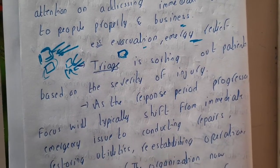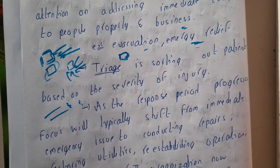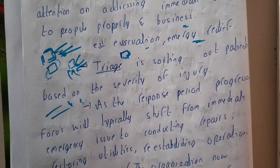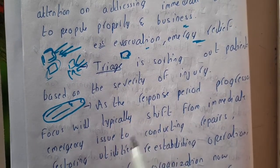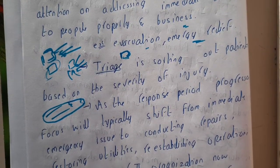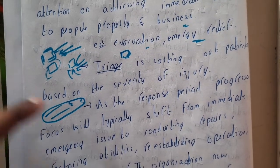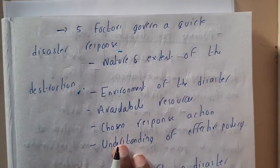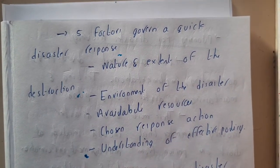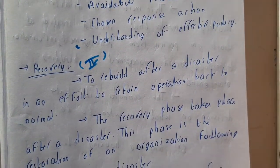As the response period progresses, the focus shifts from immediate emergency issues to conducting repairs and restoring normalcy. For example, floodwater eventually sinks into the ground and recedes. Once the response phase is done, you plan to resolve remaining issues — such as cleaning up collapsed buildings and reinstalling infrastructure. Five major factors under response are: nature and extent of destruction, environment of the disaster, available resources, chosen response actions, and understanding of effective policies.